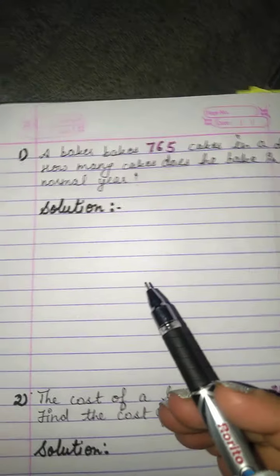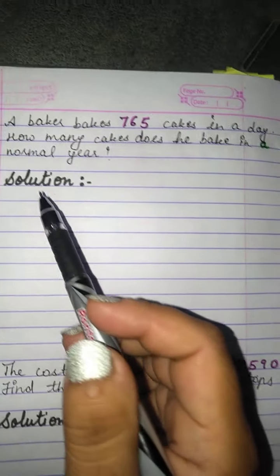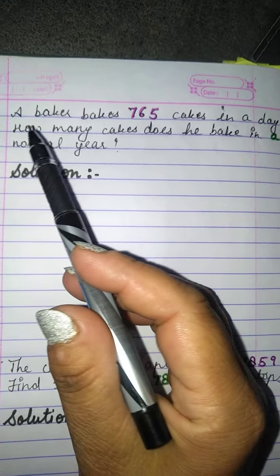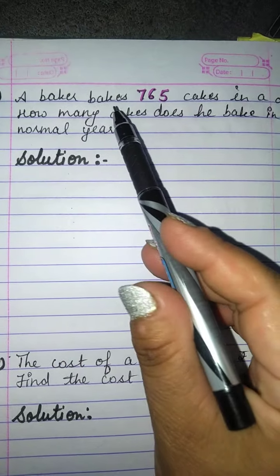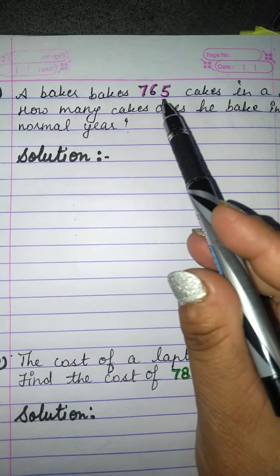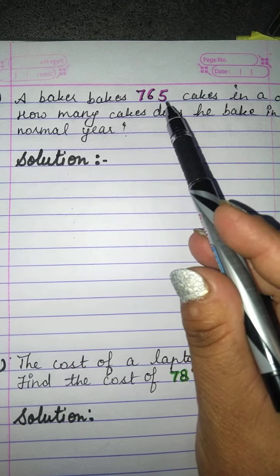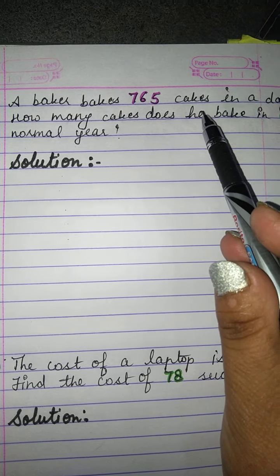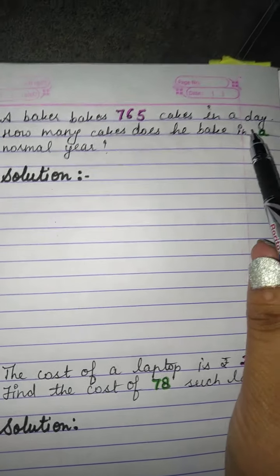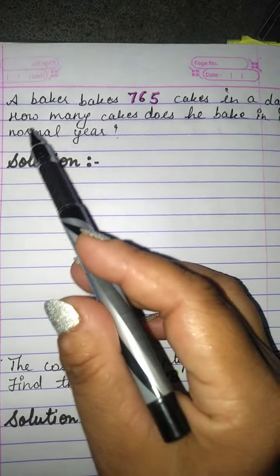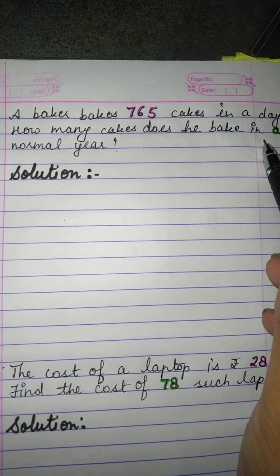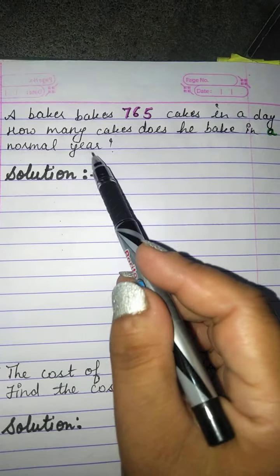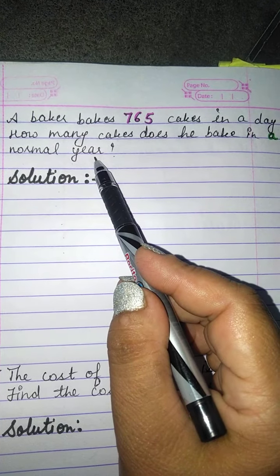We'll solve this problem here. Just read the question carefully. A baker bakes 765 cakes in a day.